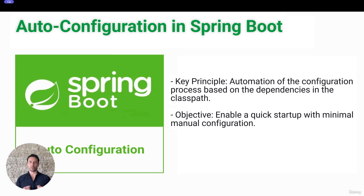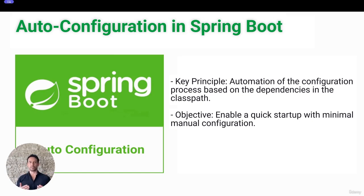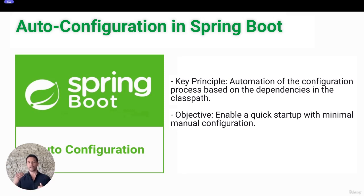How does auto-configuration work? Spring Boot automatically detects all the necessary components and configurations based on the various libraries present in your application's classpath. For example, if Spring Boot finds Spring Boot Starter Web in the classpath, it automatically configures the application as a comprehensive web application, setting up an embedded Tomcat server and initializing Spring MVC.